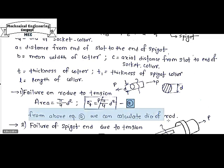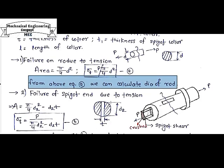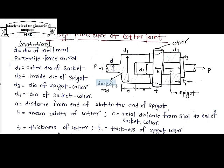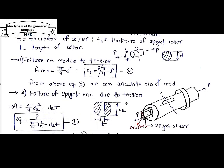From equation A we can calculate rod diameter small d. Further, we can design the socket, spigot, or cotter — any one of them. First I am considering the spigot.